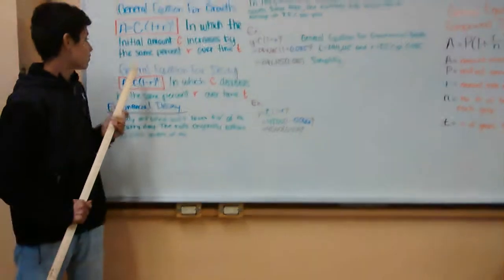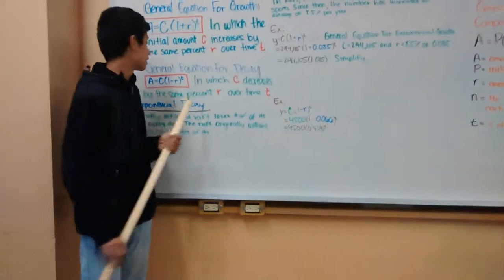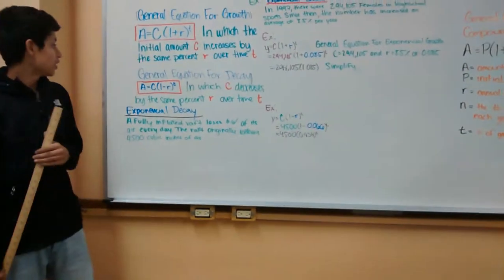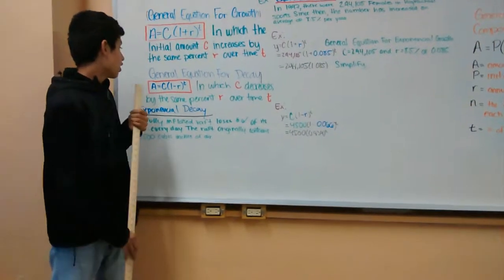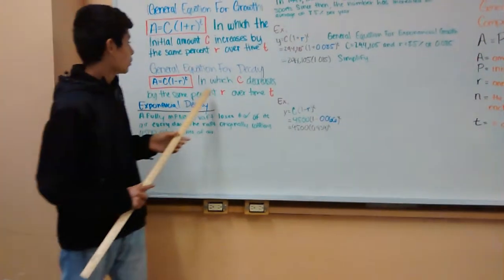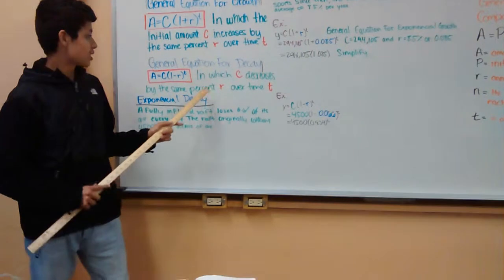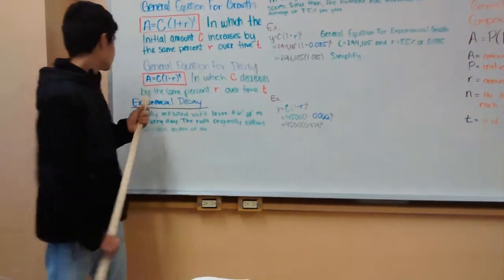Next one would be general equation for decay. A equals C times one minus r to the power of t, in which C increases by the same percent r over time.